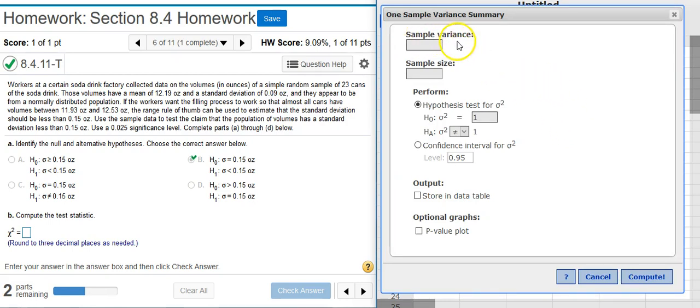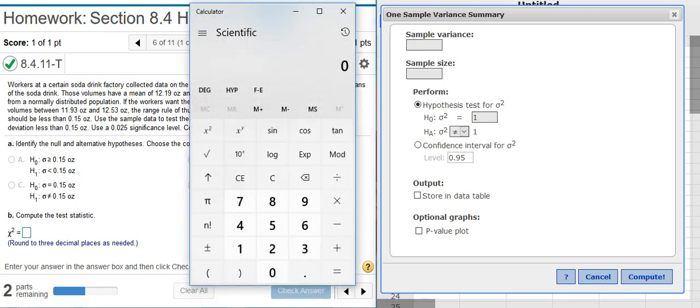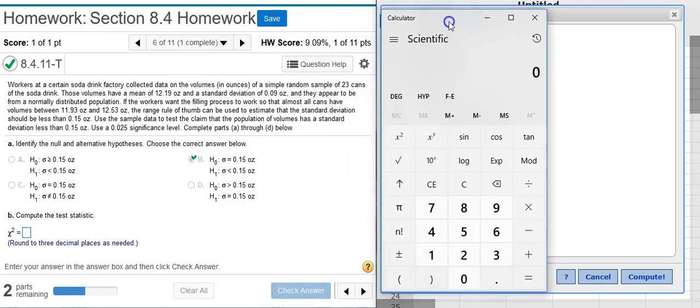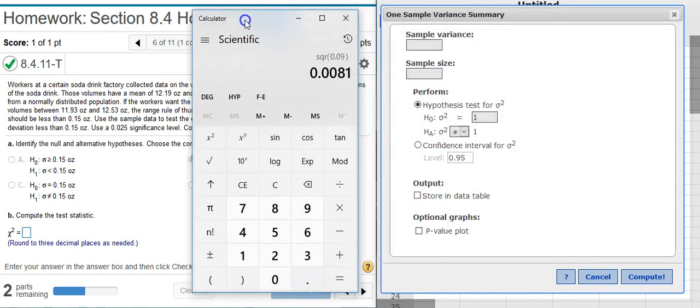Here in the Options window, I'm first asked for the sample variance. Well, look here in the Problem Statement, and we see that we're not given the variance, but we are given the standard deviation. If I square standard deviation, that gives me the variance. The variance is the square of the standard deviation. So if I pull up my calculator here, and I take that standard deviation of 0.09, and I square it, that gives me the variance for my sample, which is 0.0081.